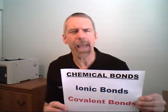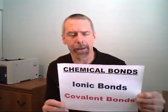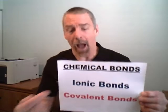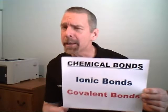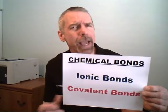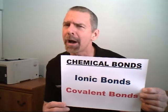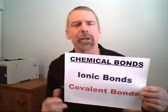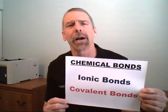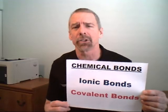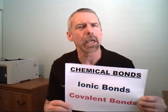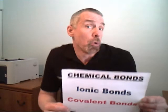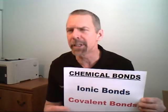Ionic bonds, covalent bonds, both of them chemical bonds. How are they made? What's the difference? Watch, you'll see.